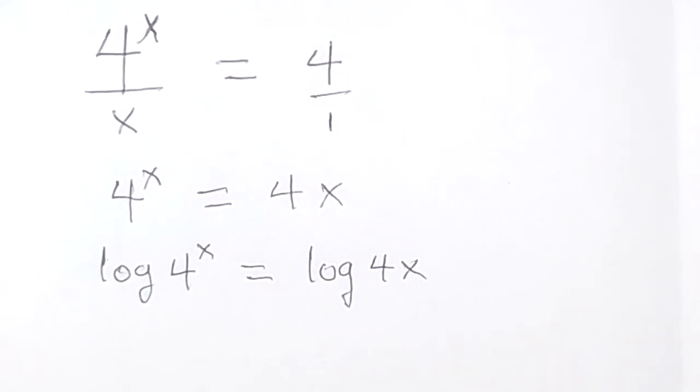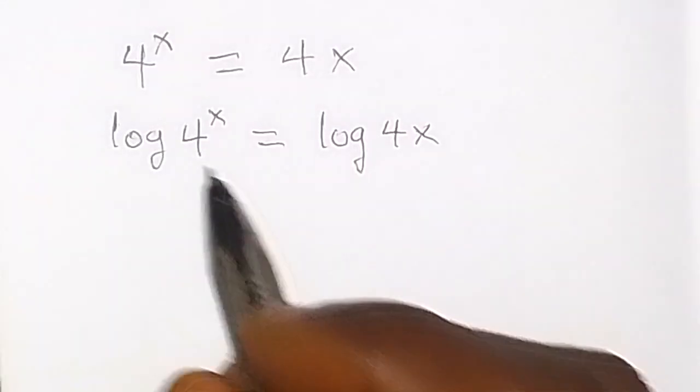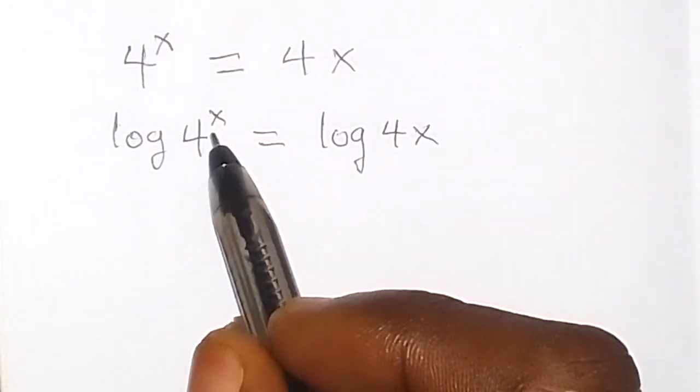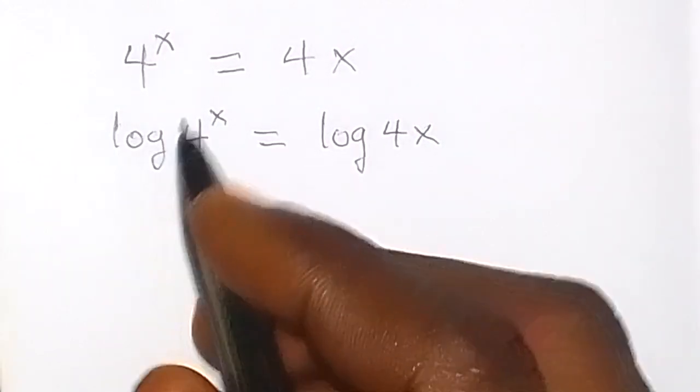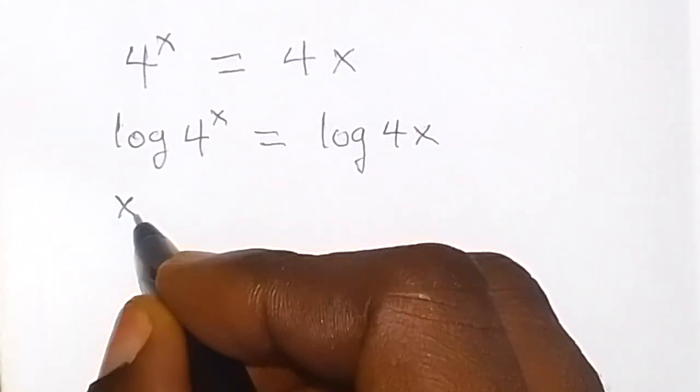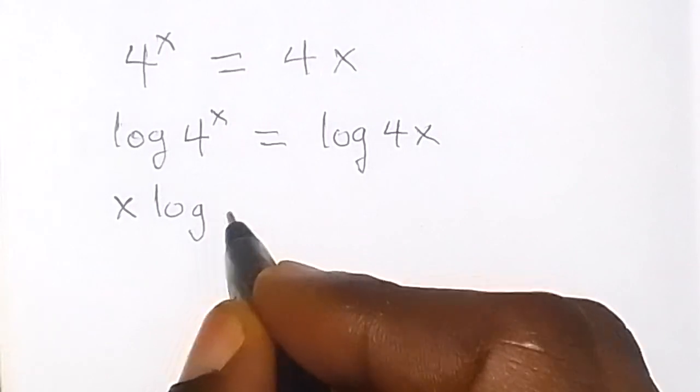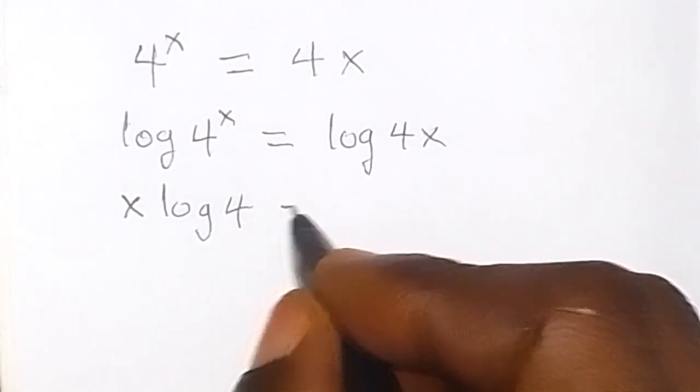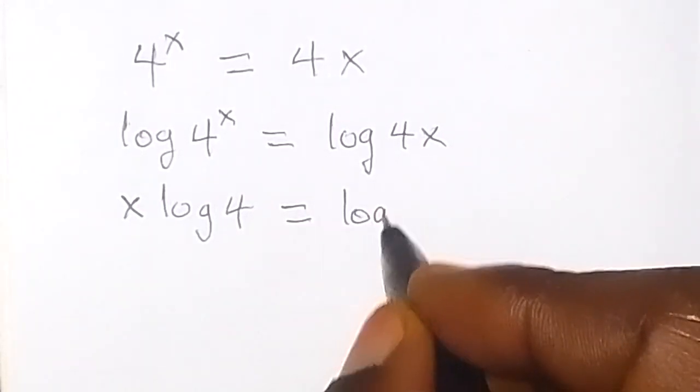And this is natural log. From here we can see that from one of the laws of logarithms, we have this x can come to the back here. And this is x log 4 equals to log 4x.